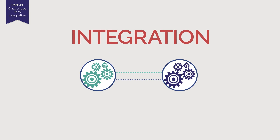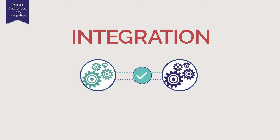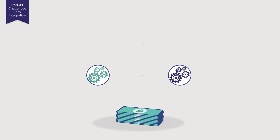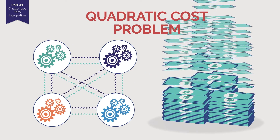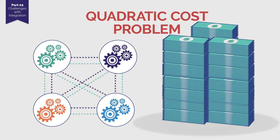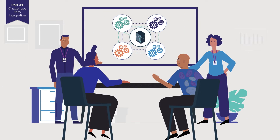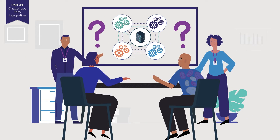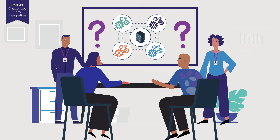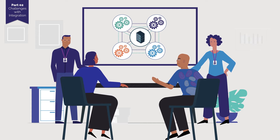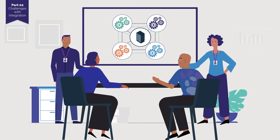Writing software to directly connect applications, or integration, may be able to connect your applications, but there will still be the quadratic cost problem. Is there a way for multiple applications to communicate with each other that addresses the quadratic cost problem? Yes — we will explore this in the next part.